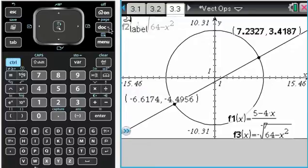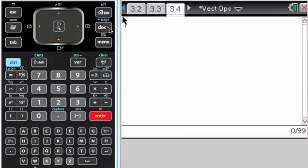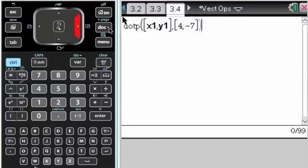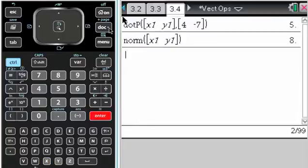So what I'll do now is I'm going to check my answer. So insert another calculator page. And I need the dot product of my vector, which is X1, Y1. And the given vector, negative 4, negative 7. See what I get there. I get 5, which is what I was looking for. And if I find the norm or the magnitude of X1, Y1, it's the 8 that I was looking for. So the vector,